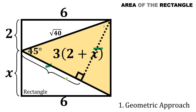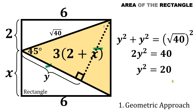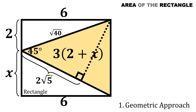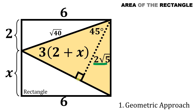Let this side be equal to y. Using the Pythagorean theorem: y² + y² = (√40)², simplifying gives 2y² = 40, so y² = 20. Taking the square root of both sides, y = 2√5. This y equals 2√5. Take note this perpendicular line is also the height of our triangle, and since this is a 45-45-90 right triangle, this length is also 2√5. So we now have the height of our triangle.